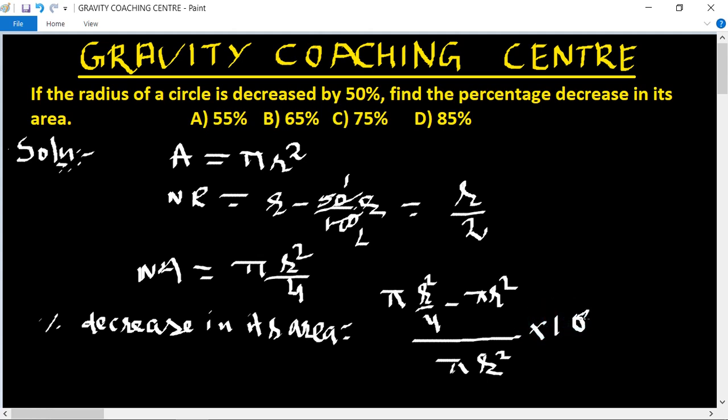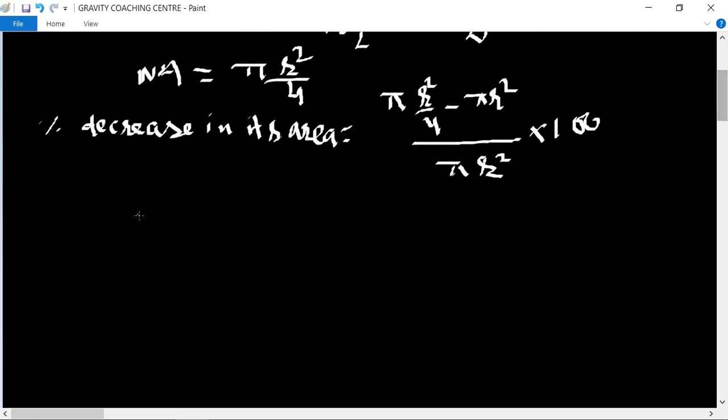Times 100. Now what do we have to minus? 3 pi R squared upon 4 and pi R squared.